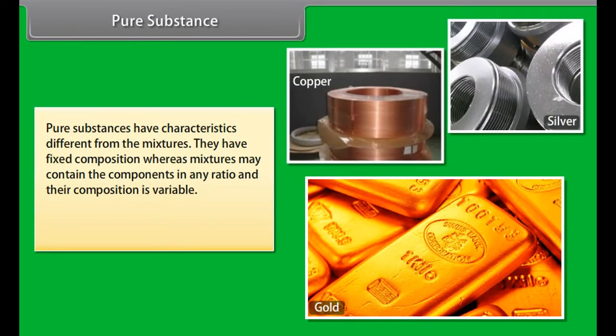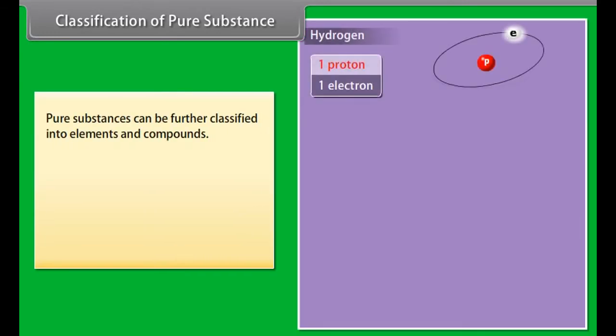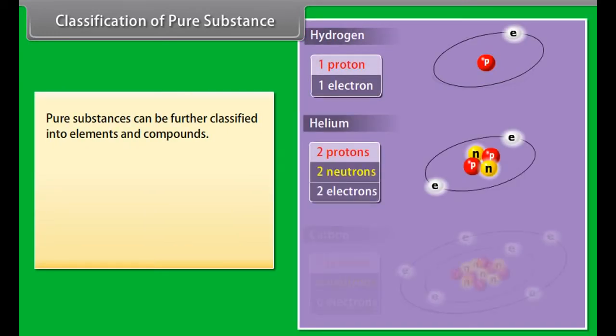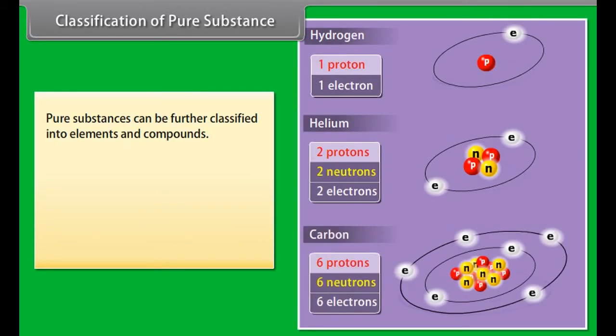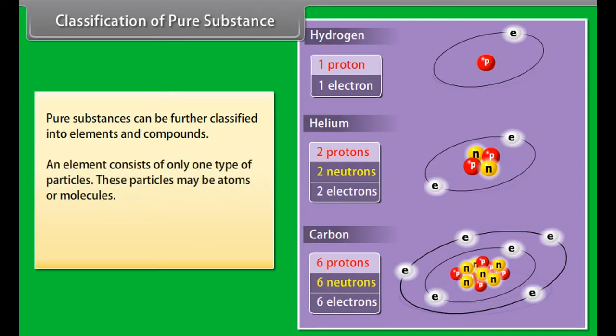Types of Mixtures: A mixture may be classified into homogeneous and heterogeneous. Homogeneous Mixture: In a homogeneous mixture, the components completely mix with each other and its composition is uniform throughout. Examples: Mixture of sugar in water, salt in water, copper sulphate in water.